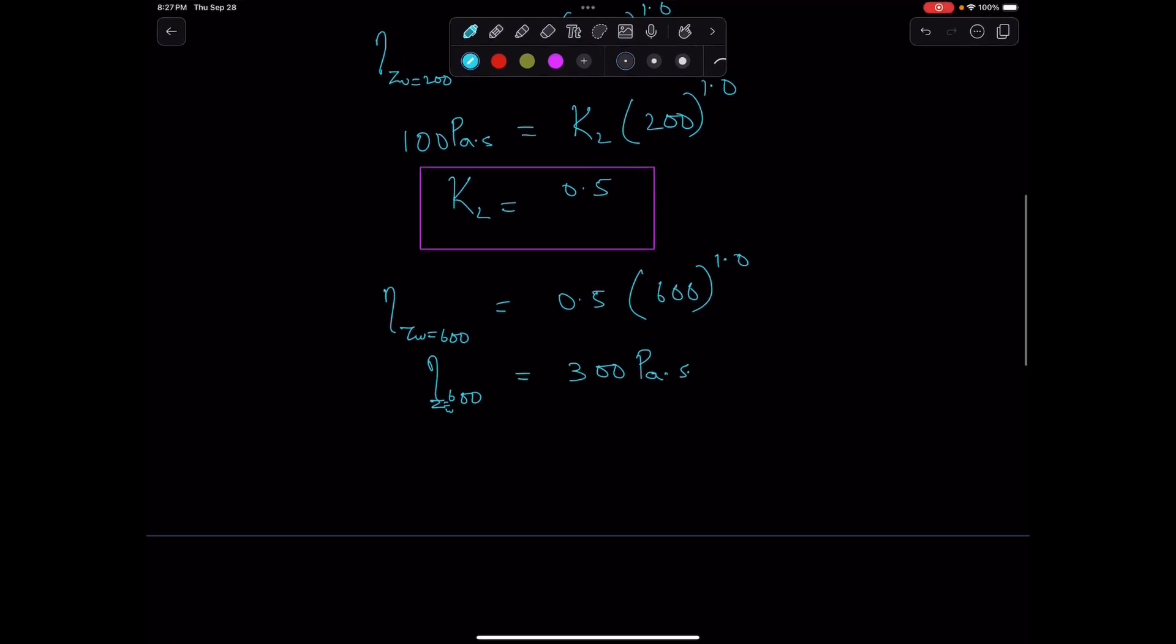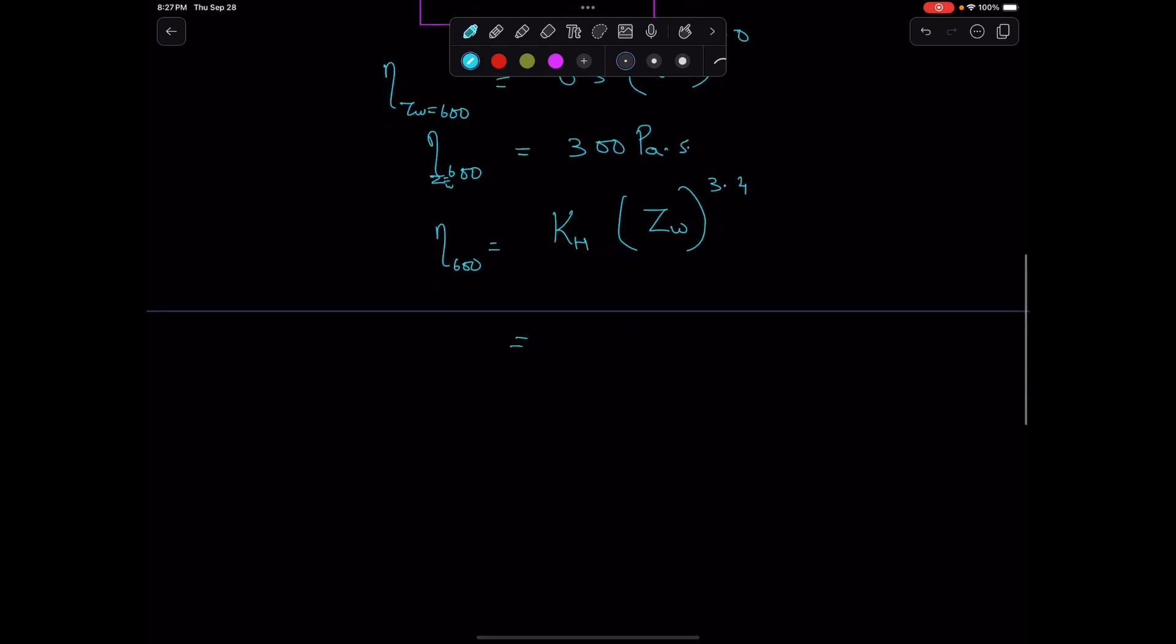This will be equal to KH times ZW to the power 3.4, which equals KH times 600 to the power 3.4. This gives us KH equals 1.1 times 10 to the negative 7.